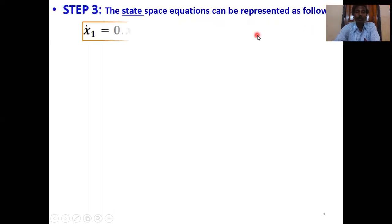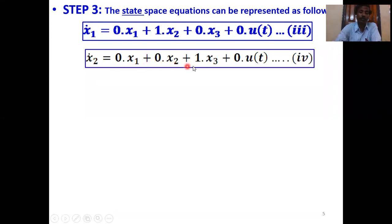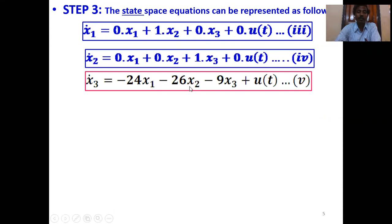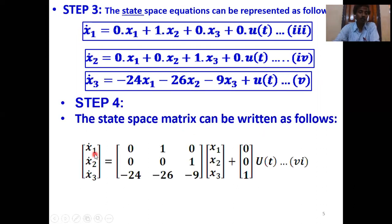Step 3: the state space equations can be represented as: ẋ₁ = 0·x₁ + 1·x₂ + 0·x₃ + 0·u(t), ẋ₂ = 0·x₁ + 0·x₂ + 1·x₃ + 0·u(t), ẋ₃ = −24·x₁ − 26·x₂ − 9·x₃ + 1·u(t). The state matrix A = [[0,1,0],[0,0,1],[−24,−26,−9]].